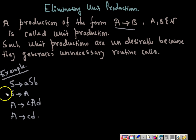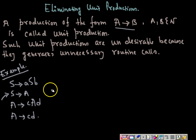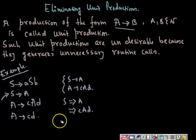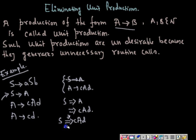The first example is this one here. We can see that this is the unit production we have in this production set. The fact is that if we eliminate the unit production from the production set, then the effect of the unit production must be retained, otherwise the language will not be the same. We can see that S arrow A is a unit production, and A arrow CAD is another production. From these two, we can derive A from S and then derive CAD, meaning S derives CAD in many steps.